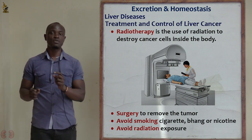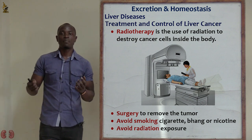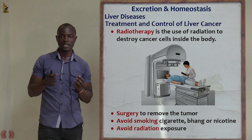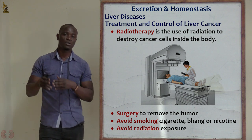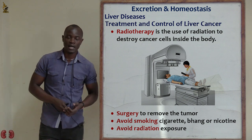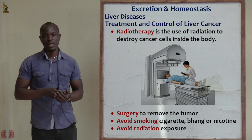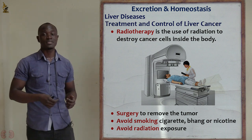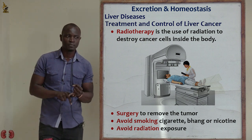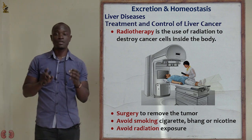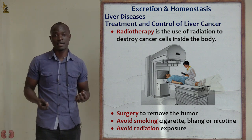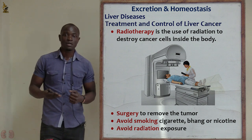In severe cases, surgery may be preferred to remove the tumor. Other treatments and controls include: avoid smoking at all costs, and avoid radioactive materials that release harmful waves — such as those containing uranium, radium, or radon. Avoiding radioactive materials is important in order to prevent and control liver cancer.